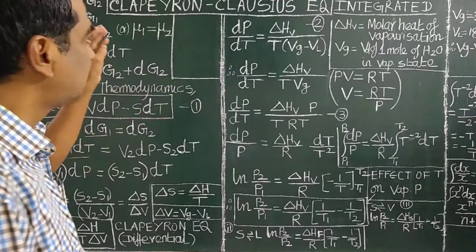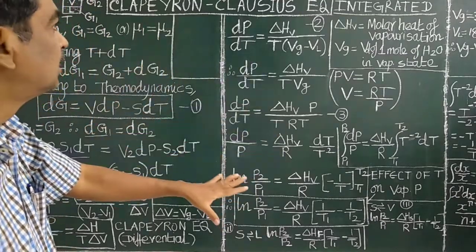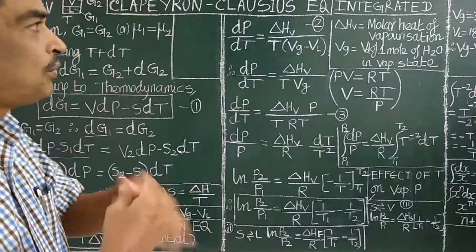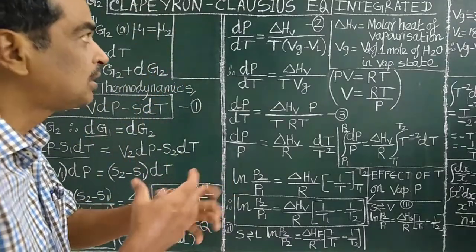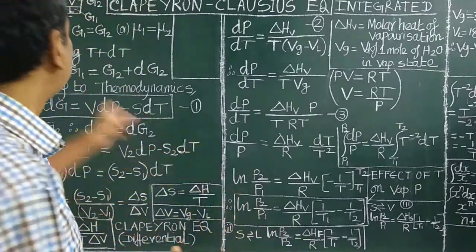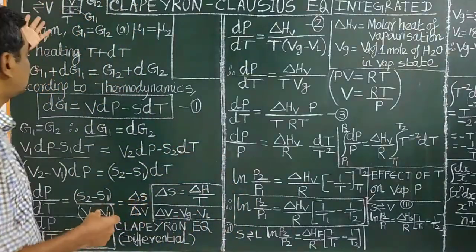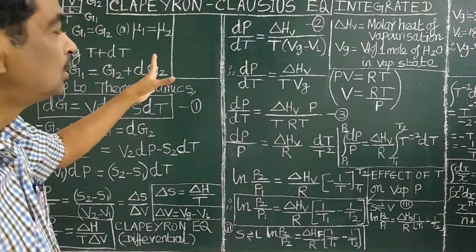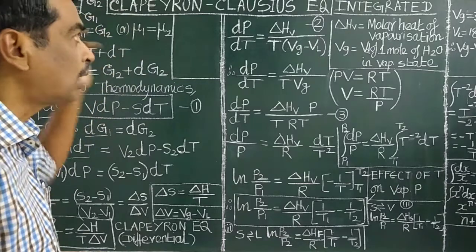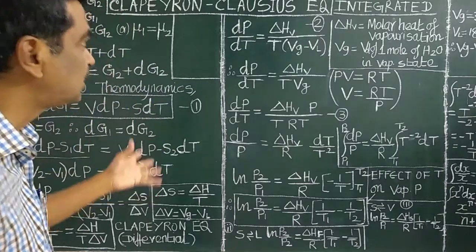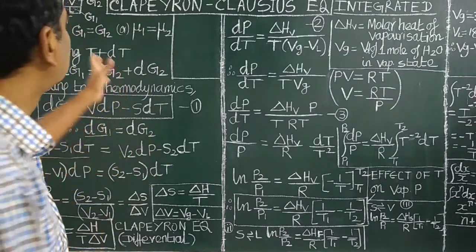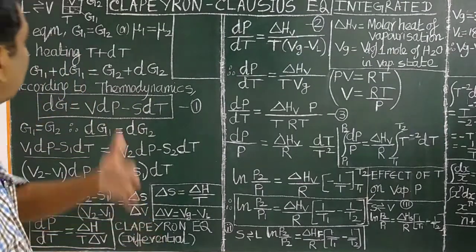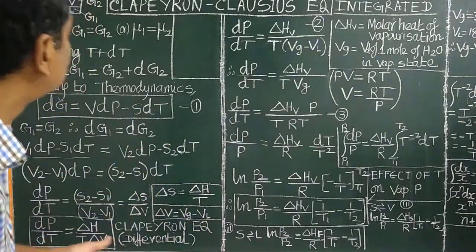Let us see today the thermodynamic derivation. It is a mathematical equation used to describe phase equilibria and phase transition curves — for example, the vaporization curve. It is extensively used in phase rule for systems such as water (one-component system), sulfur system, and carbon dioxide system, where we have vaporization curve, sublimation curve, fusion curve, and transition curve.